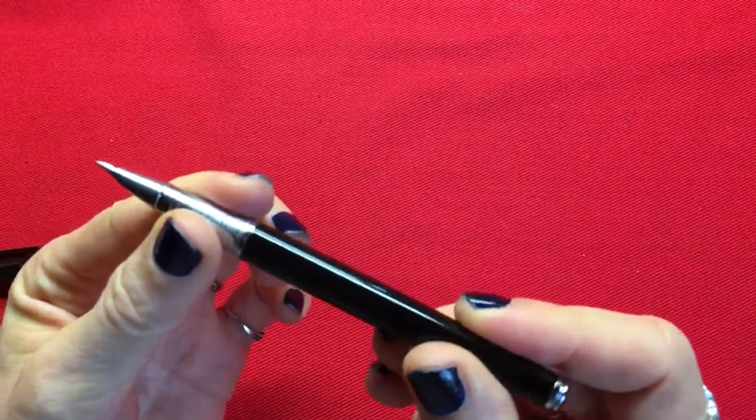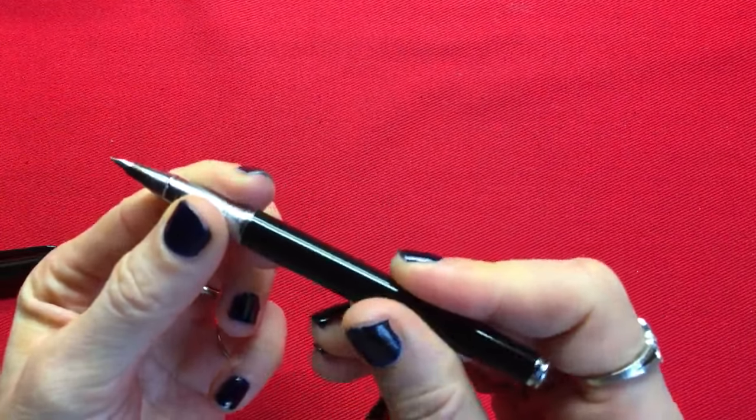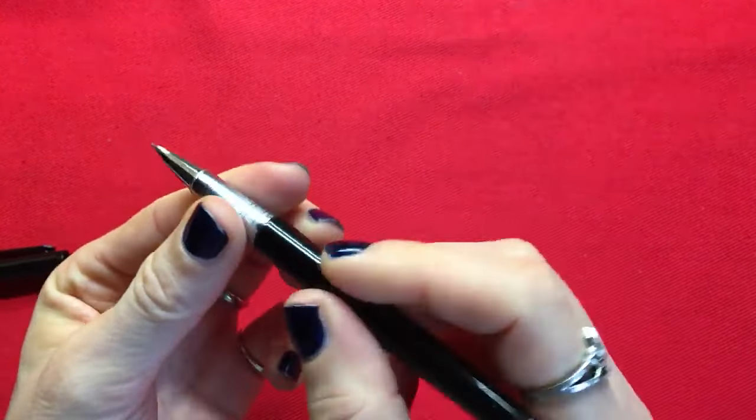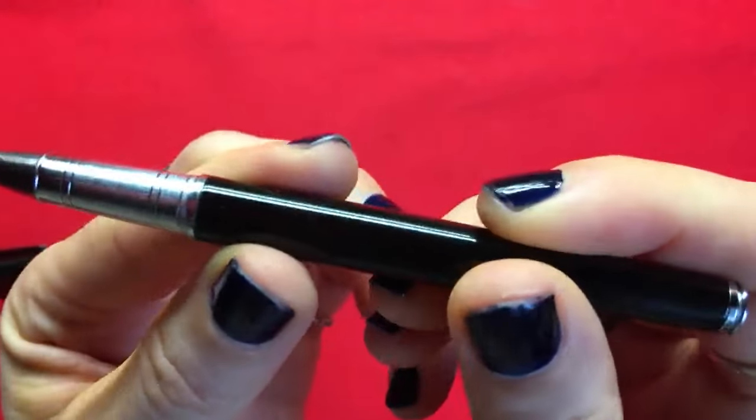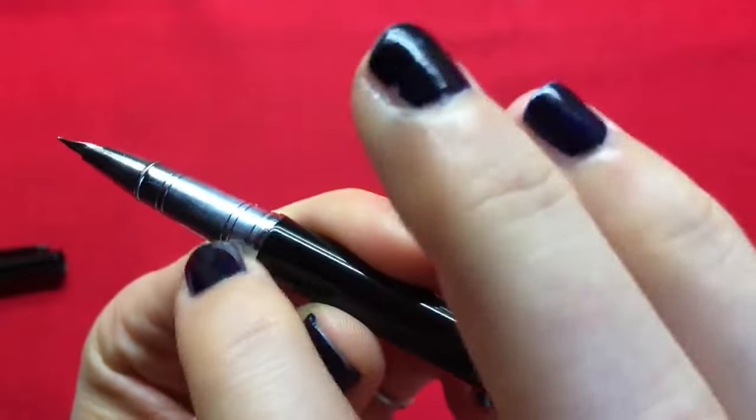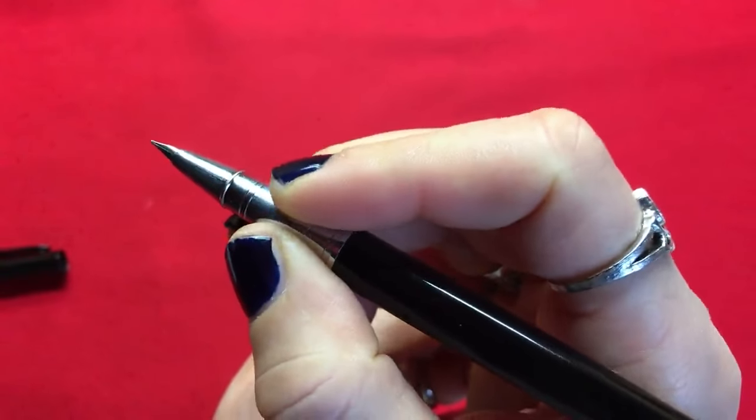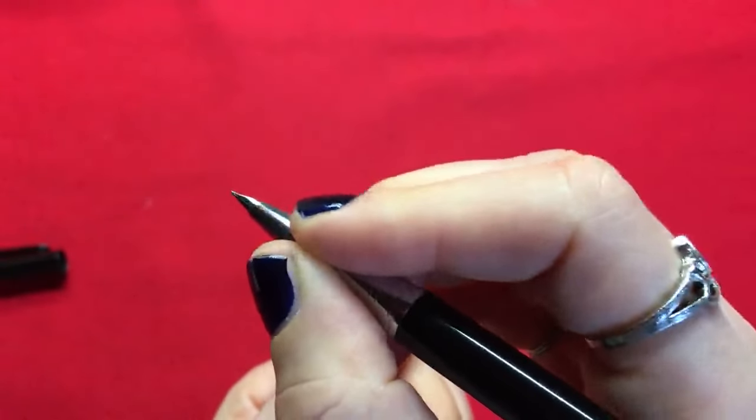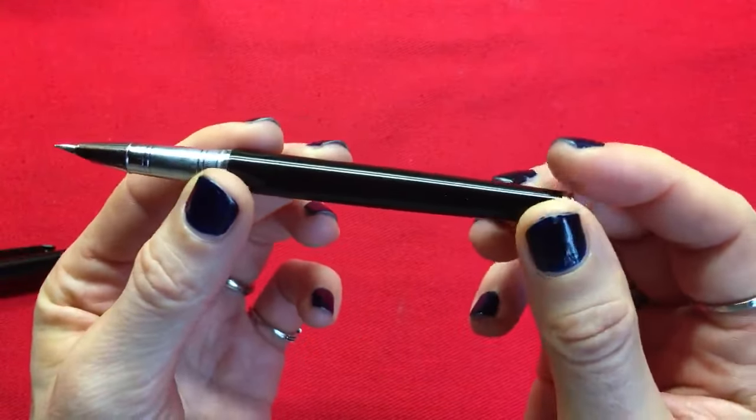What I disliked about this pen is the section part which sometimes when you write it unscrews, which is very irritating. No matter how strongly I try to screw it, it unfortunately opens up somehow. The section or grip has some marks here which apparently should allow it to hold better, but it doesn't help really much. And this kind of stopper here also doesn't stop the fingers from slipping down.